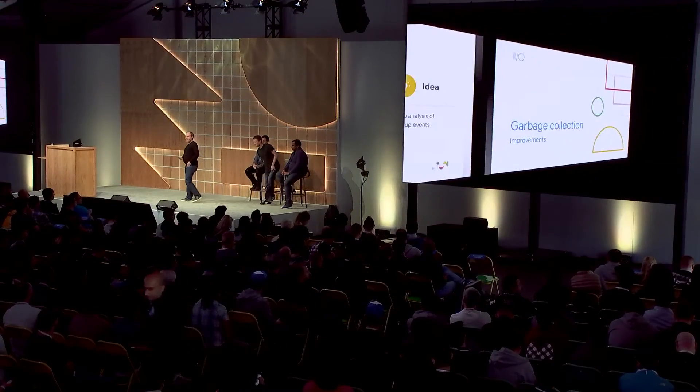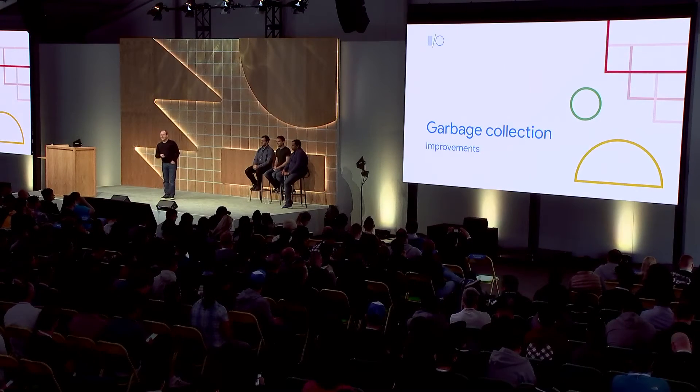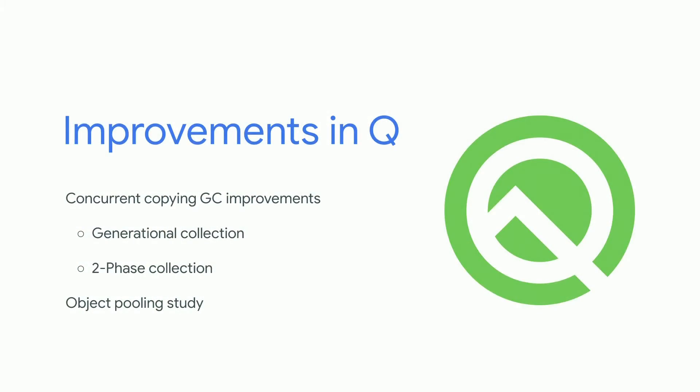Thank you, Chris. Hi, everyone. My name is Roland, and I'm going to present the improvements we've made to ART's garbage collector for Android Q. In Android Q, we've improved ART's garbage collector in two ways: first, by adding support for generational garbage collection, which makes GC cheaper overall; and second, by using a two-phase collection strategy, which makes garbage collection more precise and able to reclaim more objects. We've also re-evaluated the benefits of object pooling versus standard allocation in ART, and we'll share our findings and recommendations later in this talk.